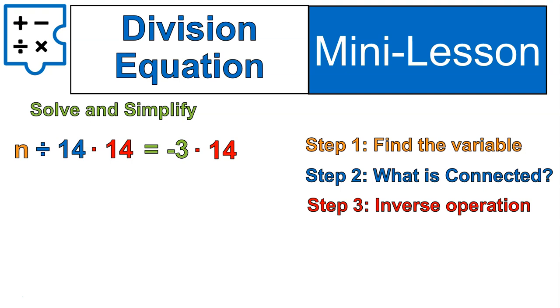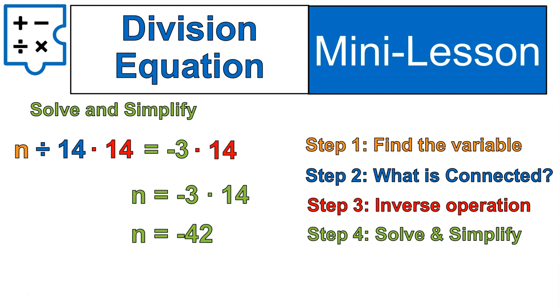Anyway, let's go ahead and solve that. That gives us n is equal to negative 3 times 14. When we simplify, we get n is equal to negative 42.